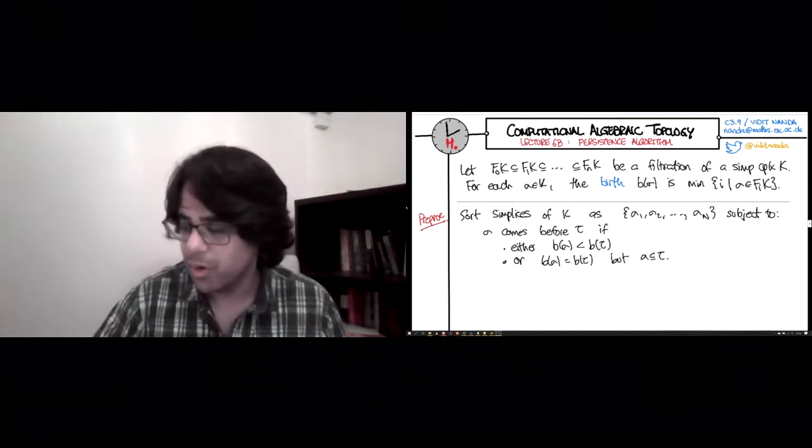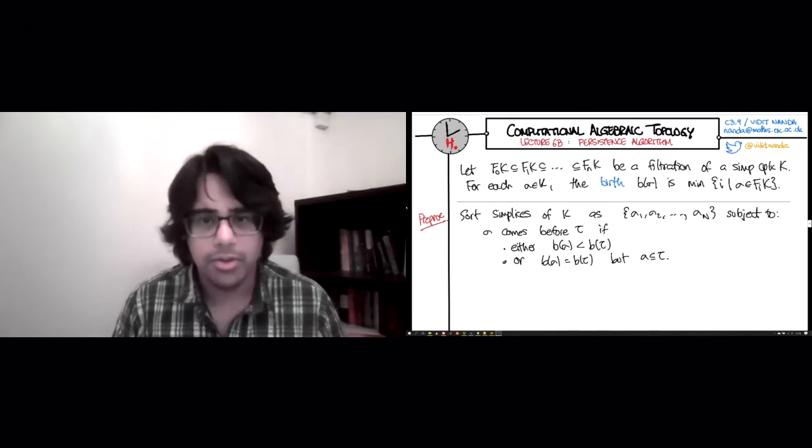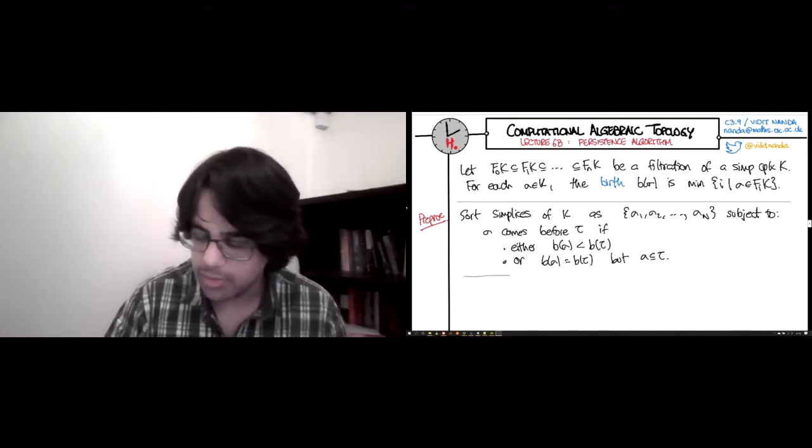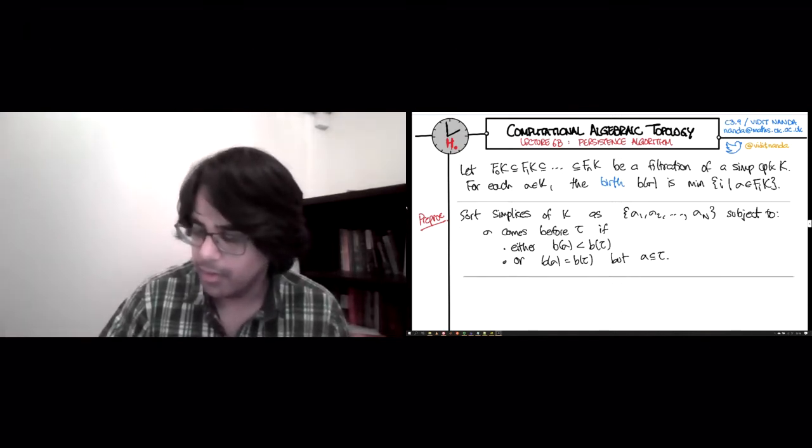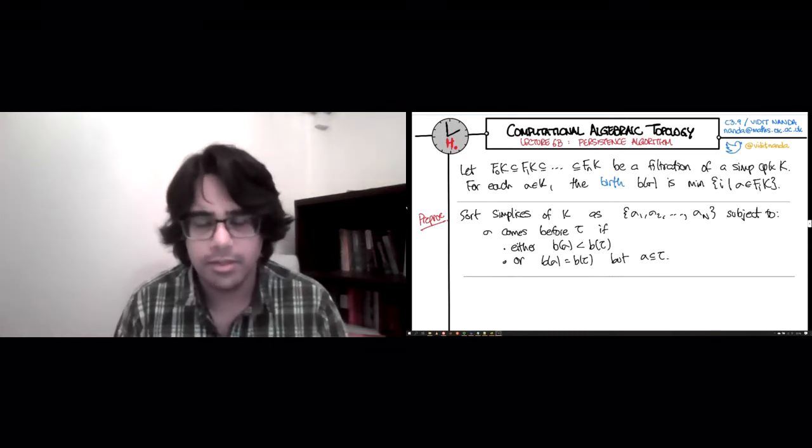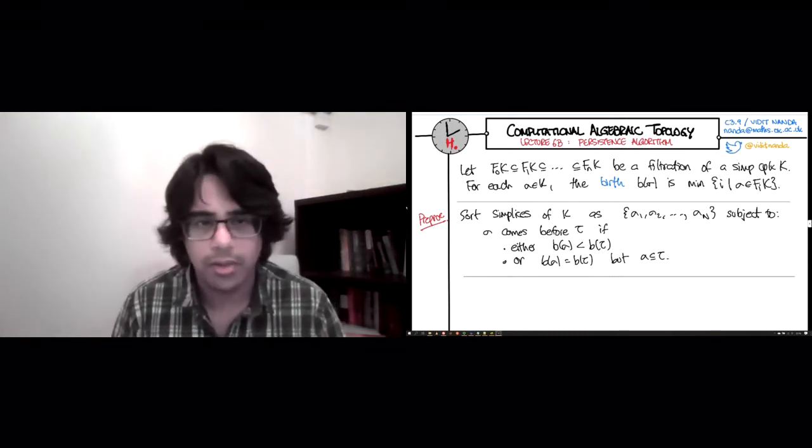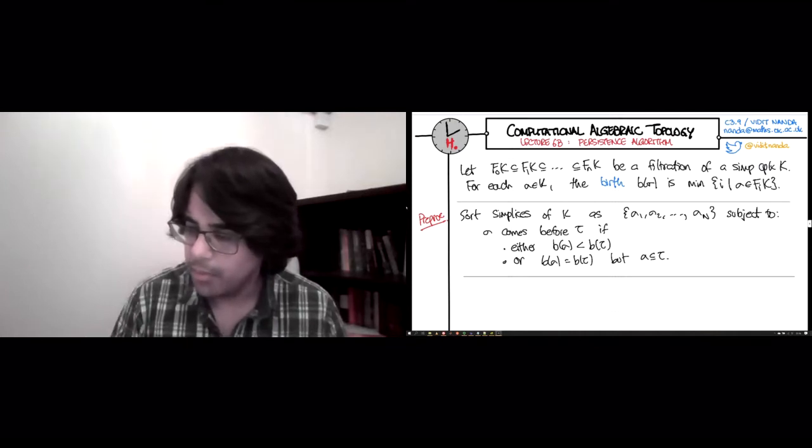So aside from these two requirements, the sorting can be arbitrary, so there's no reason to sort them. So within the same birth class, when two things are not faced with each other, you can sort them any which way you like.